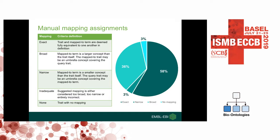Once we performed the automated mapping, we went through manual curation of these mappings. This included manually curating every suggested mapping and assigning a label of exact, broad, narrow, inadequate, or no mapping. In the end, almost 60% of the mappings were exact, meaning the UK Biobank trait and the mapped term were deemed fully equivalent. 36% of mappings were broad, meaning the mapped term is a larger concept than the trait — for example, mapping lung adenocarcinoma to lung cancer. 3% were narrow, meaning the mapped term is a smaller concept — for example, mapping lung cancer to lung adenocarcinoma.